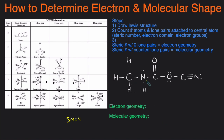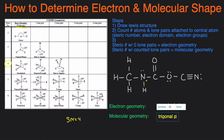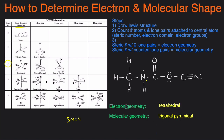Next we'll look at the nitrogen. The first step is to determine the steric number. Nitrogen is attached to 1, 2, 3 atoms and 1 lone pair, so that's a total of 4. Our steric number is still 4. For electron geometry, we look at 4 with zero lone pairs, giving us tetrahedral. For molecular geometry, nitrogen actually has one lone pair, so we look at 4 with one lone pair — that gives us trigonal pyramidal. So the electron geometry is tetrahedral and the molecular geometry is trigonal pyramidal for the nitrogen.